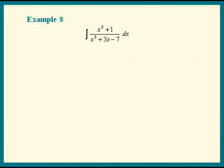In the natural log formula, we have the integral of du over u. So let us let u be the denominator, x cubed plus 3x minus 7.